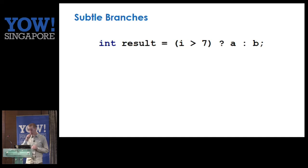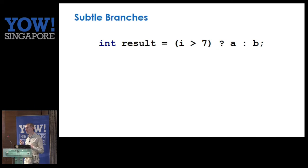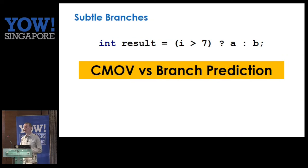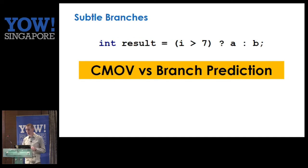We also have subtle branches in code — like 'if I is greater than 7, use A, otherwise use B.' If it's truly 50-50, branch predictors may get it right or wrong. They're pretty good generally but not with truly random distributions. X86 has special instructions like CMove — a conditional move without a branch — which is really good for the unpredictable case. If you can measure your code at runtime, you can see what data you're throwing at it and the compiler can generate the right instruction.